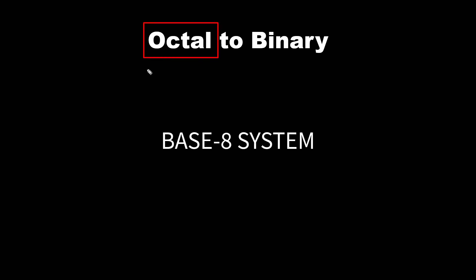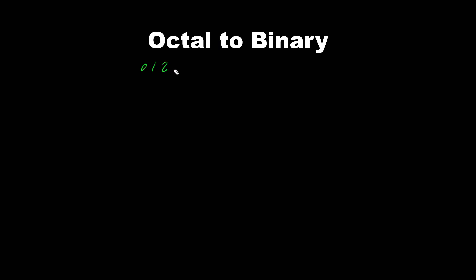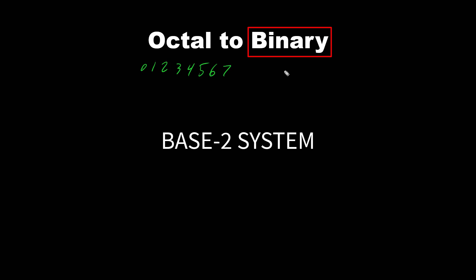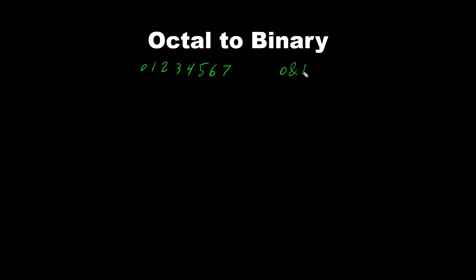The octal number is a base 8 system — we have 0, 1, 2, 3, 4, 5, 6, and 7, a total of eight different digits including 0. Binary is a base 2 system — we have 0 and 1, where 0 means off and 1 means on. So octal is base 8 and binary is base 2.